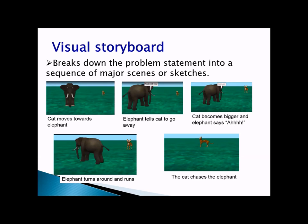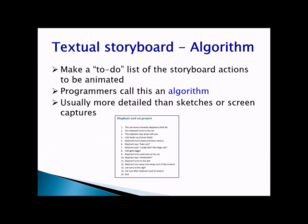If you're not an artist you can always create a textual storyboard. A textual storyboard is a to-do list for the step-by-step actions that you need to animate. Programmers call this an algorithm. We created our first algorithm in the elephant and cat project. An algorithm is more detailed than sketches — it has more details.